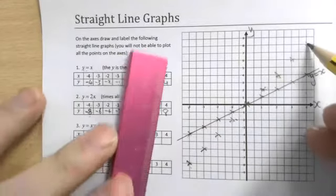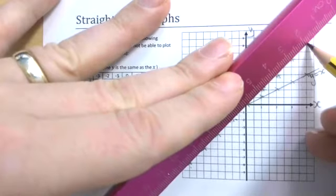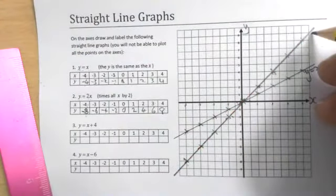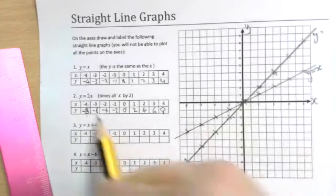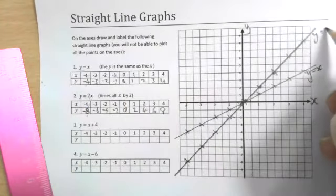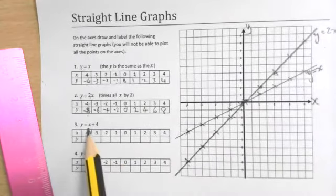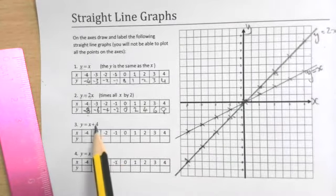And joining up again. Remember the last time I said it's a good idea to go past the crosses in both directions. Also actually makes the labeling a little bit easier because you can just use that little space there. This one was y is equal to two x. Okay, so I'm not going to plot the other ones, but I will just help you out with the table.